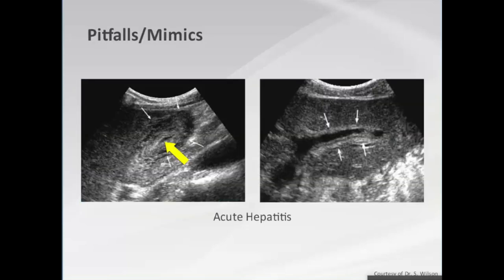Pitfalls and mimics are very important. A case given by Dr. Wilson: a patient presenting 'rule out acute cholecystitis' shows the gallbladder lumen almost completely obliterated with one of the thickest gallbladder walls you're likely to see — this onion-peel edema. The liver shows increased echogenicity in the periportal triads. Know your patient: speak to them, look at the chart. The transaminases are very elevated — this is acute hepatitis with secondary thickening of the gallbladder wall.